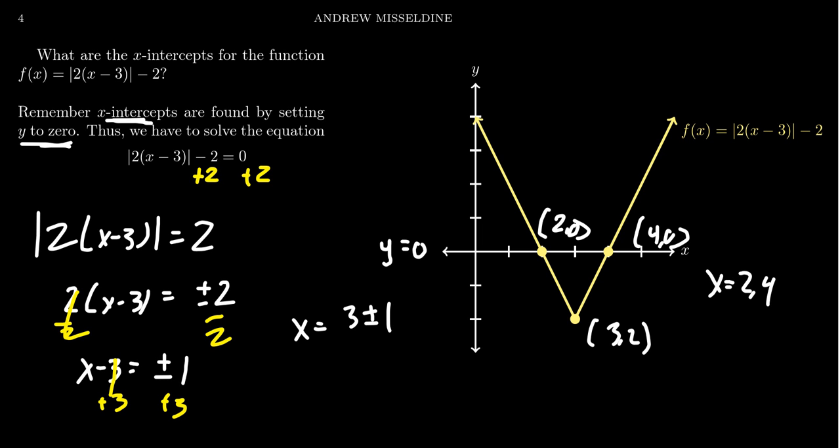And this is about as far as we can get without considering the two cases. So really, we have the two cases, 3 plus 1 and 3 minus 1, for which we then get 4 and 2, like we saw visually on the graph. So algebraically, we can solve equations involving absolute value.